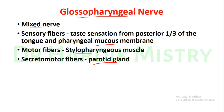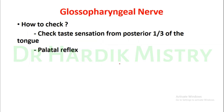Whenever there is a paralysis of the Glossopharyngeal nerve, taste sensation is lost and there is a decrease in salivation because the parotid gland is affected. To check the Glossopharyngeal nerve, first check taste sensation from the posterior one-third of the tongue.